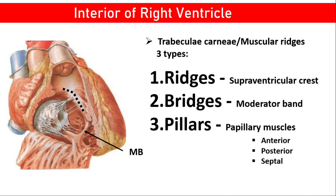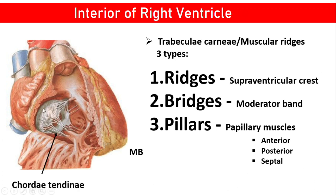There are three types of papillary muscles in the right ventricle and two types in the left ventricle. The three types are the anterior, posterior, and septal papillary muscles. The anterior papillary muscle attaches to the anterior wall of the right ventricle, the posterior muscle attaches to the posterior part, and the septal muscle attaches to the septum. Each papillary muscle attaches to the tricuspid valve through thread-like structures called the chordae tendineae. These prevent the backflow of blood toward the right atrium — preventing regurgitation — and provide unidirectional flow.